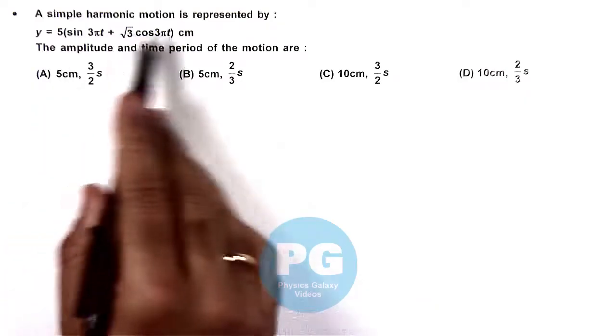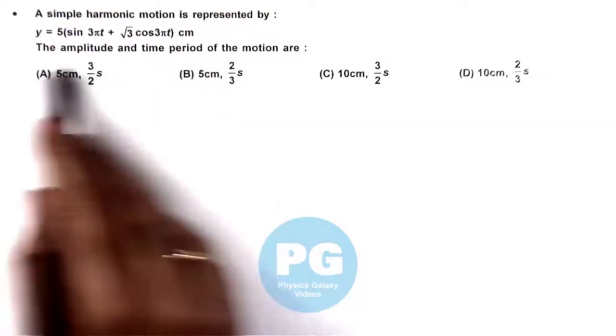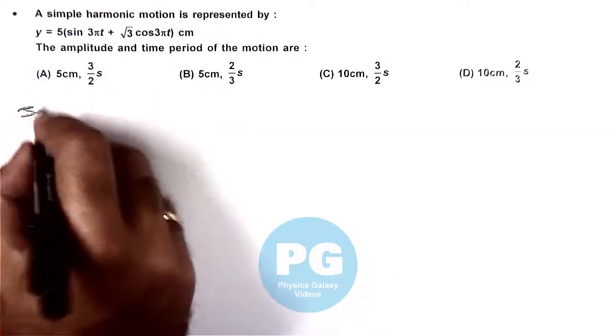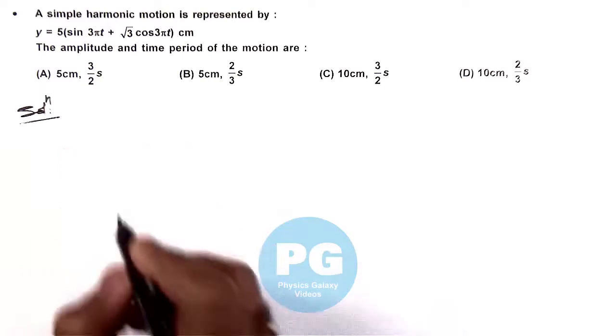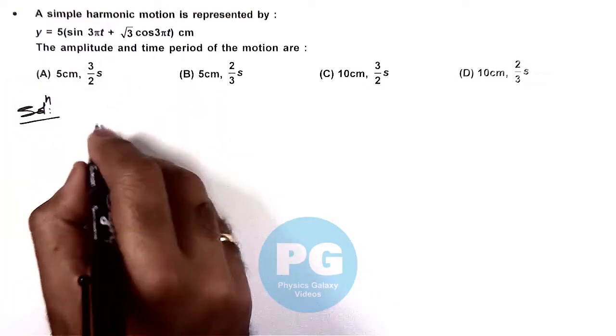In this question, a simple harmonic motion is represented by this equation, and we are required to calculate the amplitude and time period of this SHM.